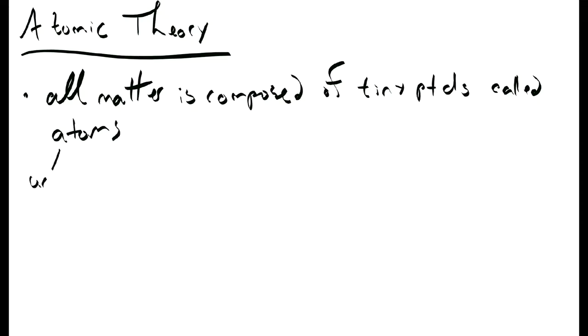First, all matter is composed of tiny particles called atoms. That's from Greek. A means un, and tom comes from tomos, which means cuttable. Atoms come in varieties or kinds called elements.